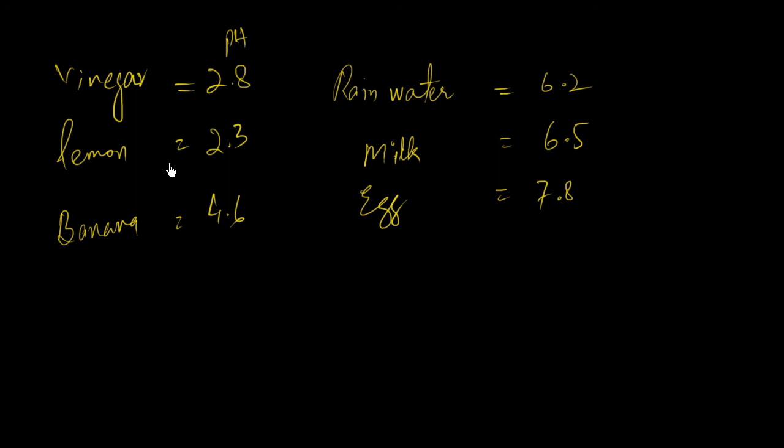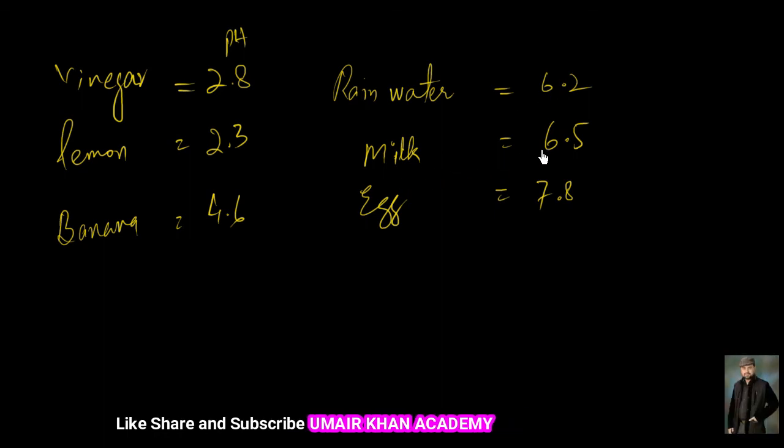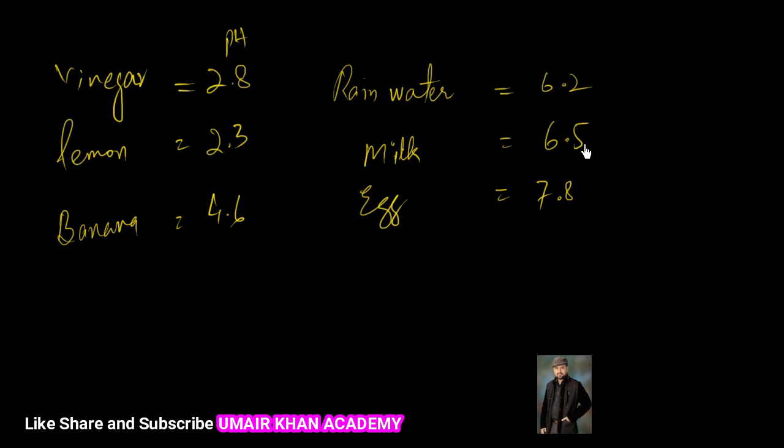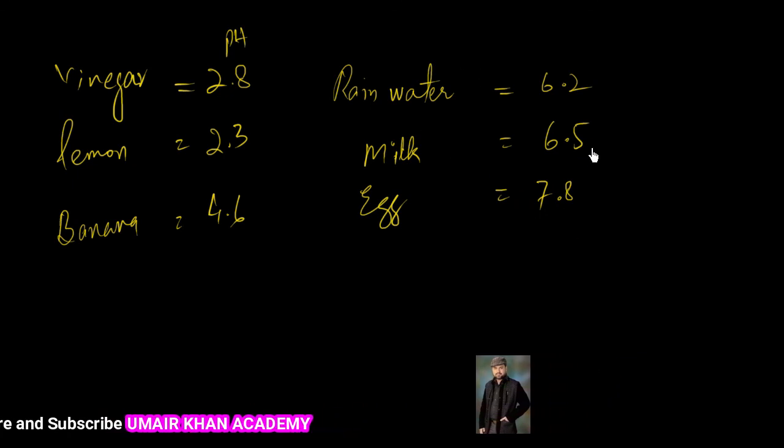If we take a pH of some important food product or natural product, for example, the vinegar has a pH of about 2.8 and is acidic. Lemon is also acidic, 2.3. 2.8 is more, 2.3 is less, but the less the value of the pH, the more acidic the solution is. And banana is 4.6, a little bit basic as compared to lemon or vinegar. Rainwater is 6.2 and milk has 6.5 and eggs 7.8, a basic product, because the pH is more than 7.